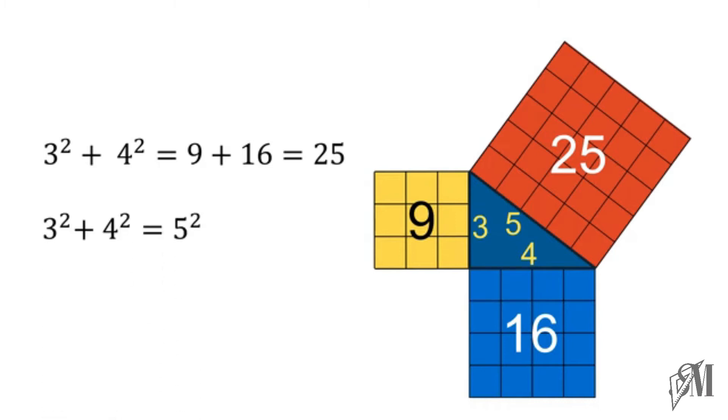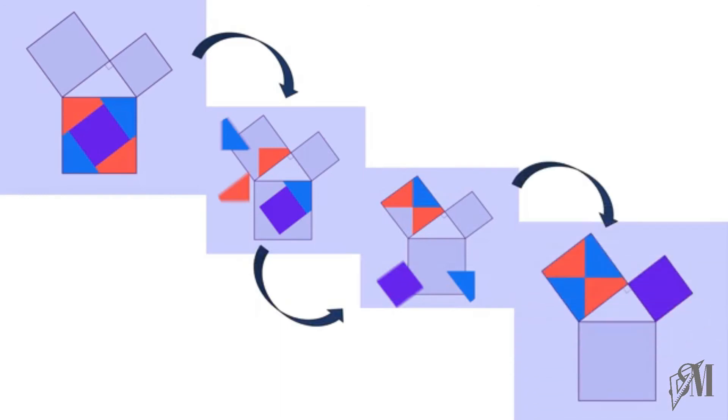The Pythagoras relationship can be confirmed in many other methods. Look at this diagram—the square on the hypotenuse is divided into a few more shapes. These shapes can be adjusted and fixed into the other two squares, and ultimately the two squares will be filled, proving that the area of the larger square on the hypotenuse is equal to the sum of the two squares on the other two sides.